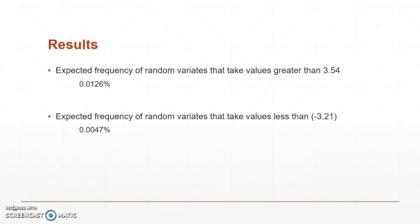So with that being said, we're able to look at expected frequency of random variates that take values greater than 3.54, which are about 0.0126%, and expected frequency of random variates that take values less than negative 3.21, which are about 0.0047%. Thanks for watching, and goodbye.